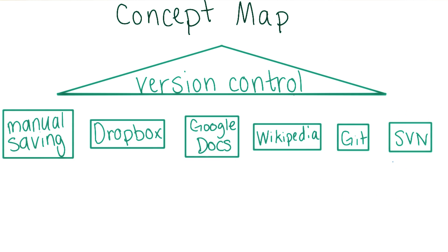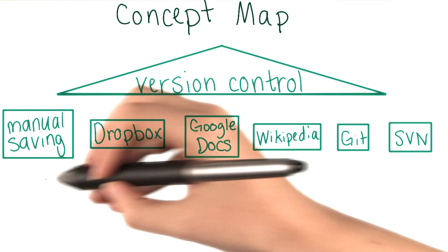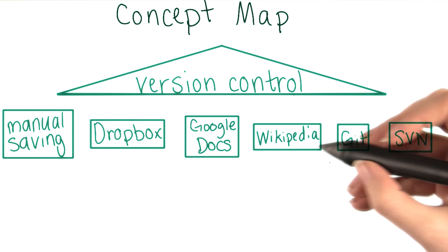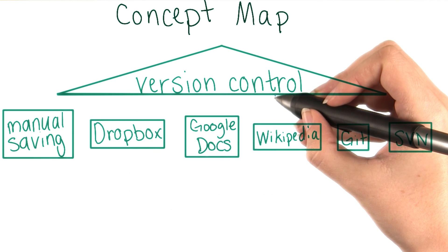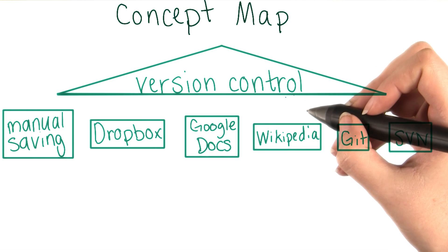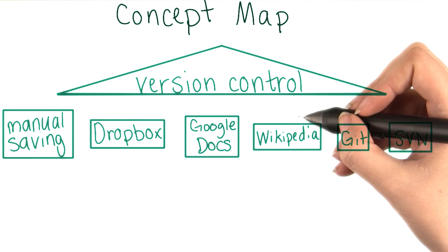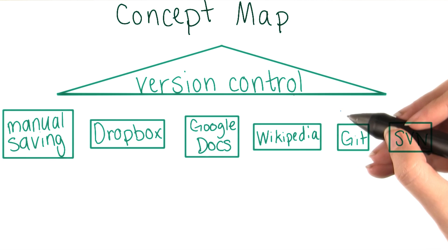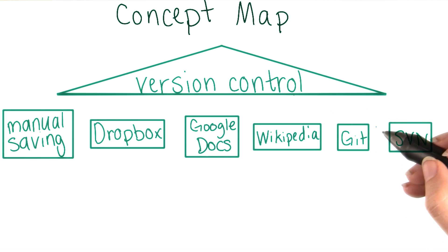Here are some specific version control systems we've talked about. These are all types of version control, so we could draw lines between each of them and the version control node and annotate the connections with labels like type of. But if we do that, our map will soon get cluttered with tiny annotations. Instead, let's use colors to indicate what type of relationship each connection has.